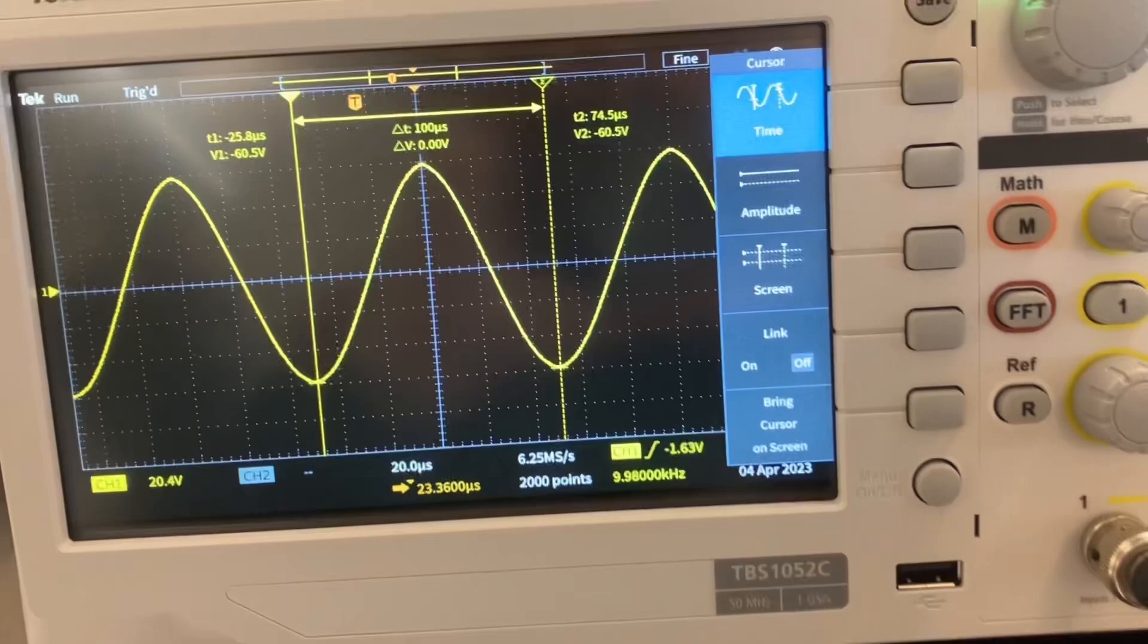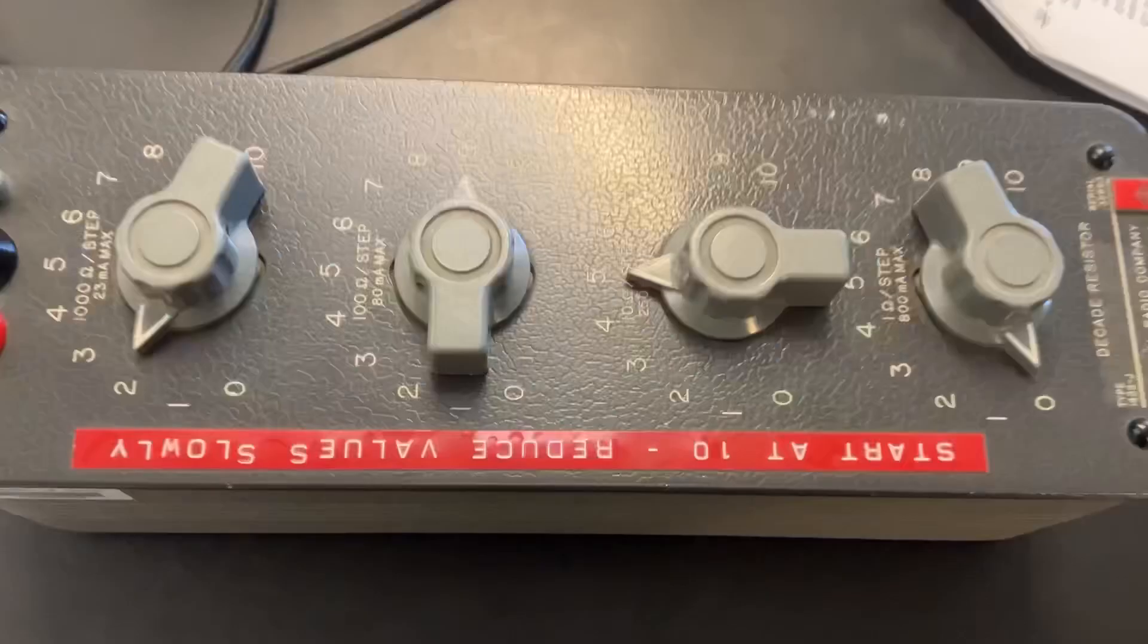Here we've got our decade resistor box. We're setting this to 2,950 ohms.